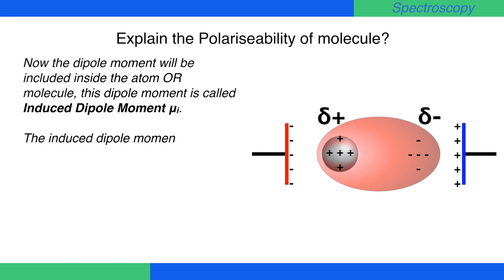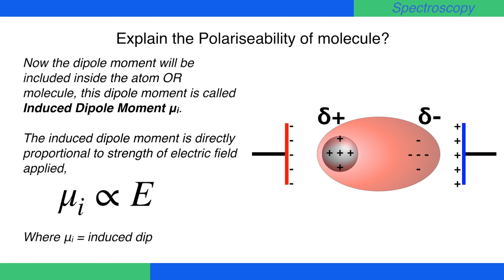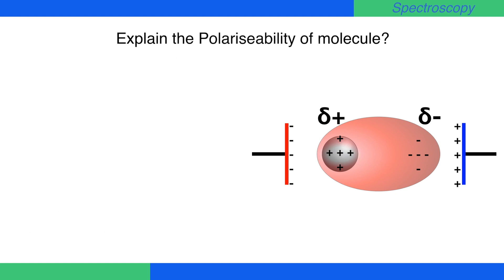The induced dipole moment is directly proportional to strength of electric field applied. Therefore, mu i is proportional to E, where mu i is induced dipole moment and E is the strength of the electric field. Therefore, mu i equals alpha E, where alpha is polarizability of the molecule.